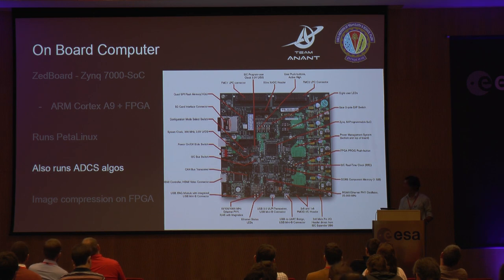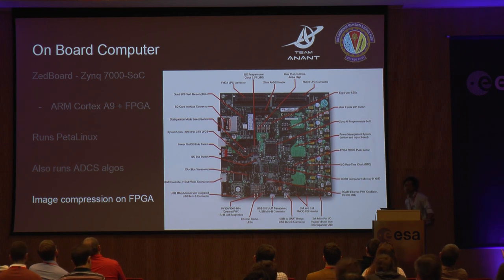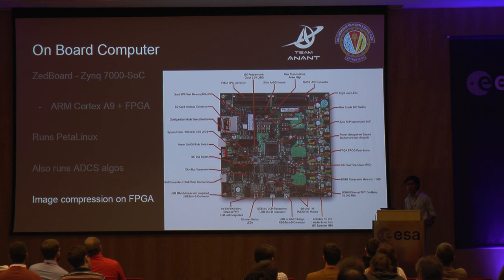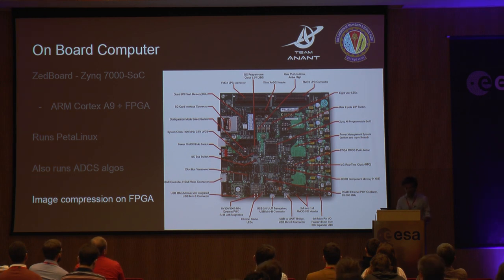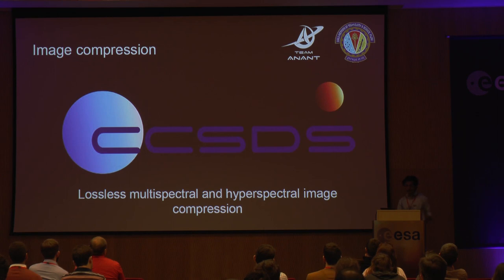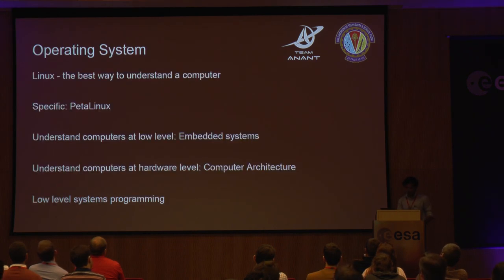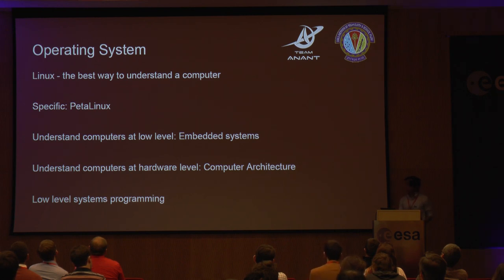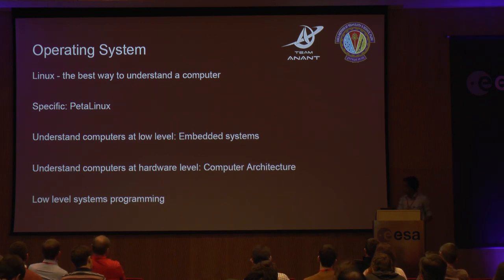You might wonder why we have an FPGA at all — why not just use a Raspberry Pi? That's because the image compression is a very power-intensive process, so we went with an FPGA to enable hardware optimizations. The algorithm we're using is the CCSDS lossless multispectral and hyperspectral image compression algorithm. PetaLinux helps me understand computers at the lowest possible level, right at the abstraction between hardware and software — that's how open source is helping me connect academics to real work.